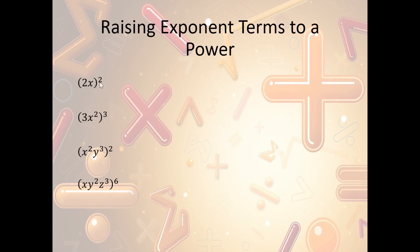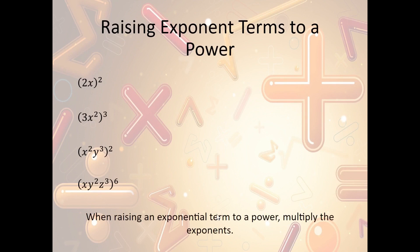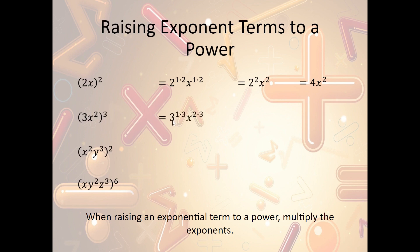Now what if we have the coefficient and variable inside of parentheses and the power outside? We're going to raise the power by multiplying the exponents. So in this case, we have (2x)² — this is really 2¹ times 2 and x¹ times 2, which is 2² times x², so that's 4x². Another example: (3x²)³ — we get 3¹ times 3 and x² times 3, giving us 3³ times x⁶. And 3³ is 27, so it's 27x⁶.